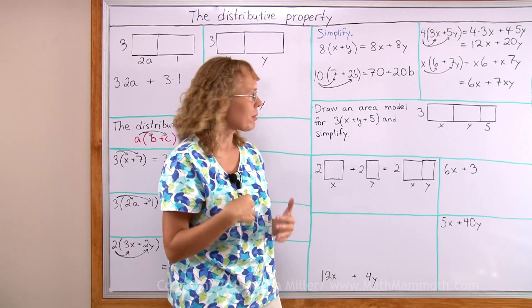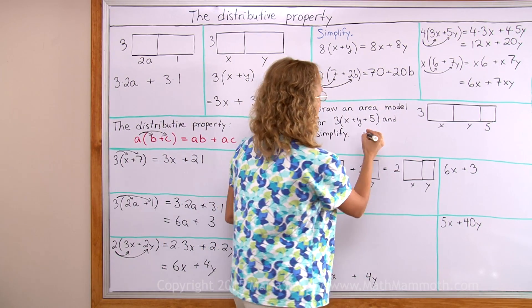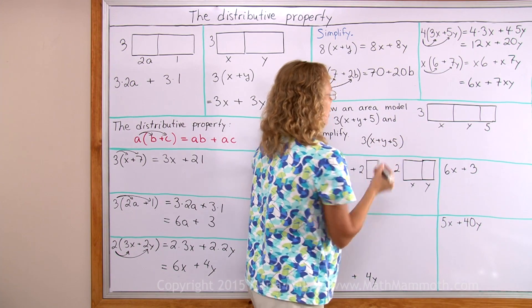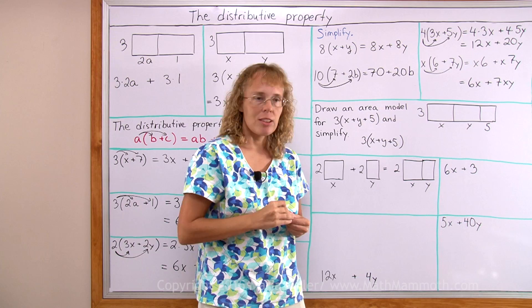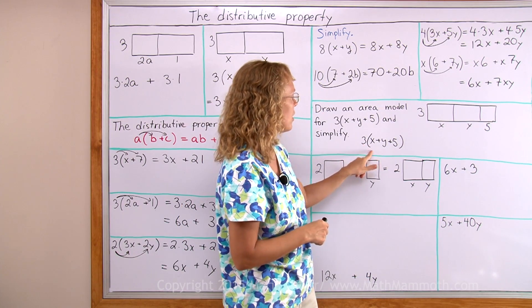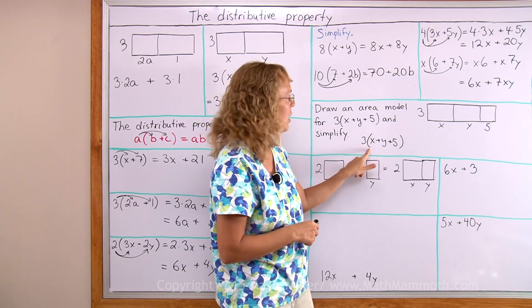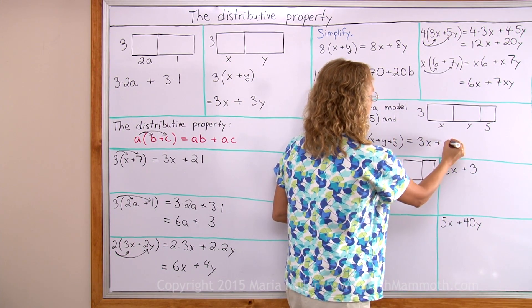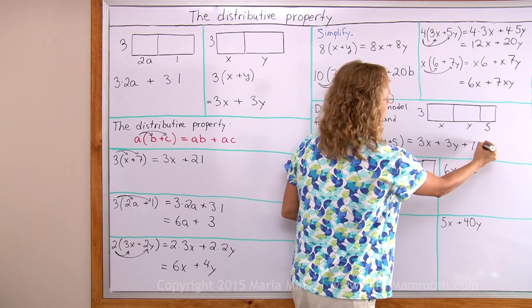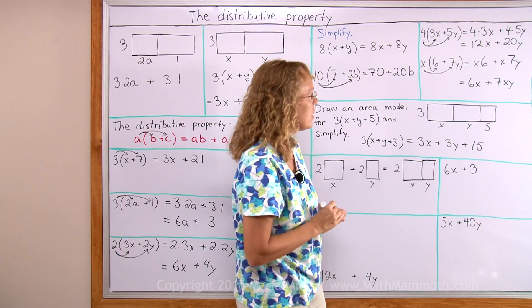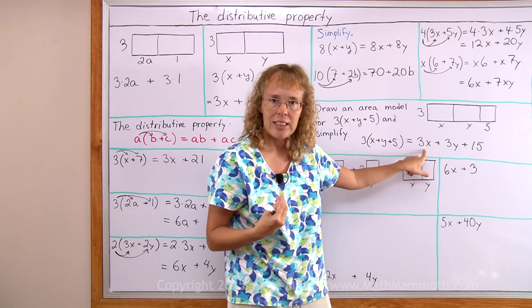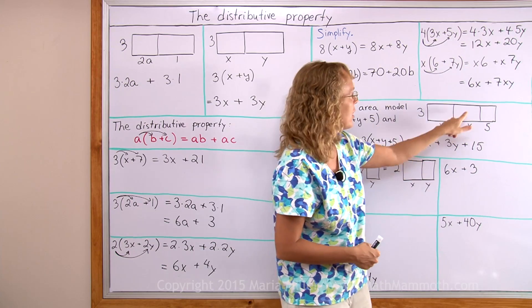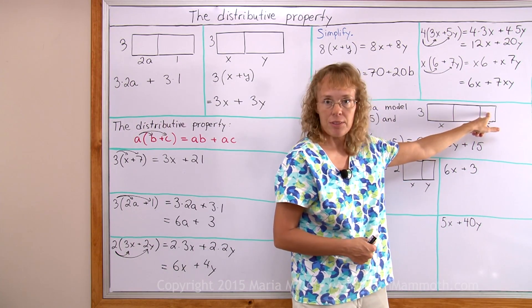Simplify means we will now get rid of the parentheses. The same principle applies, the distributive property. 3 times x and then 3 times y and then lastly 3 times 5. So we will get 3x plus 3y plus 15. And you see these are the areas of the three separate rectangles here. This rectangle here its area is 3x and then this area is 3y and this area is 15.